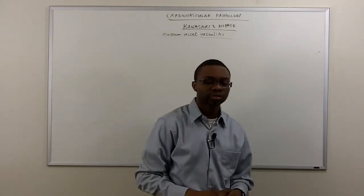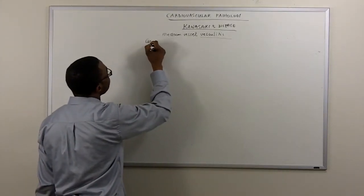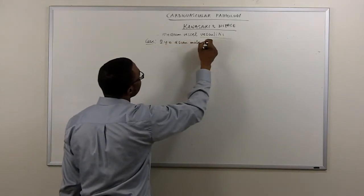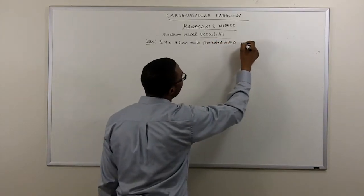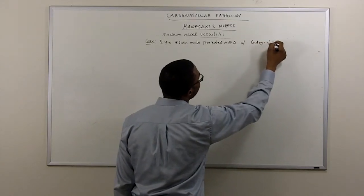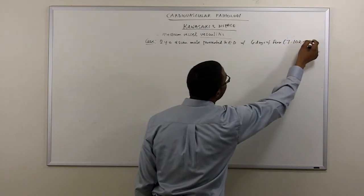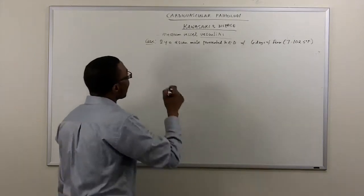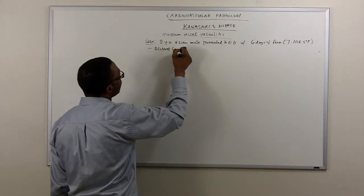A two-year-old Asian male presented to ED with six days of fever, temperature of 102.5 degrees Fahrenheit. You notice on physical exam the child has bilateral conjunctivitis.